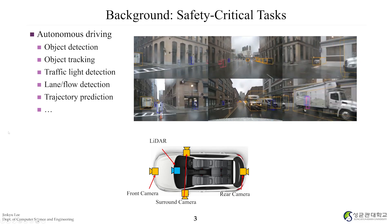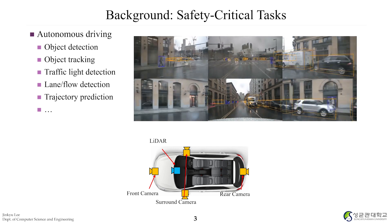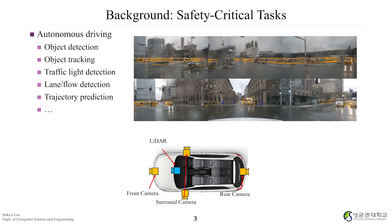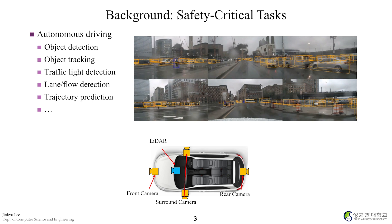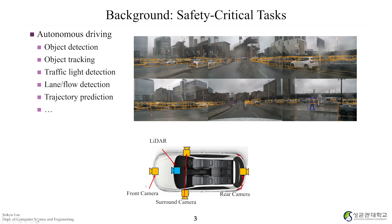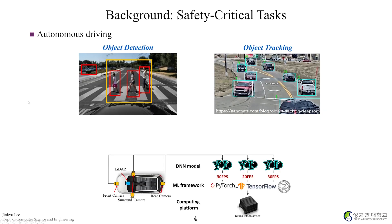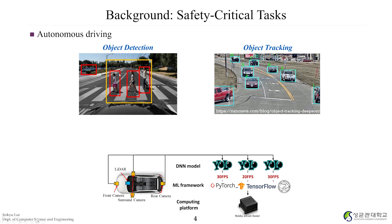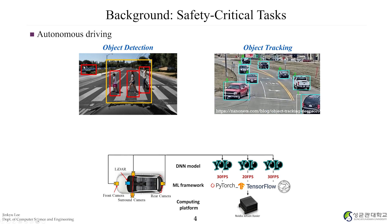This is background for safety-critical tasks. As you can see in the figures, autonomous driving needs many features such as object detection, object tracking, traffic light detection, lane flow detection, and trajectory predictions. In autonomous driving cars, there are cameras and light sensors. Using these sensors and cameras, the car should be able to perform these features. Object detection means you can capture that this is an object which is a human, or this is an object which is a car.